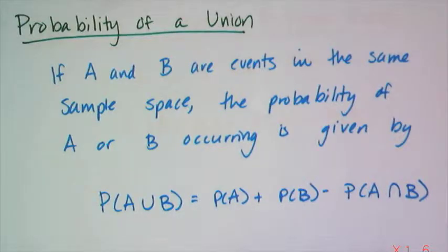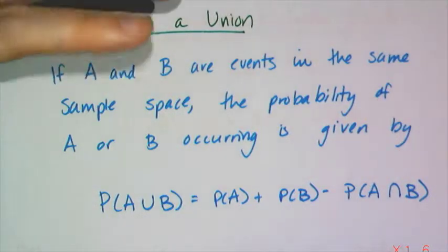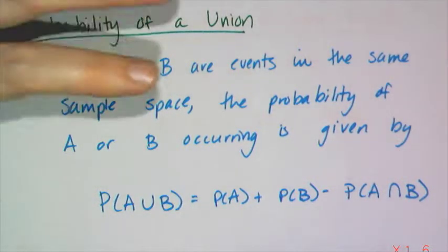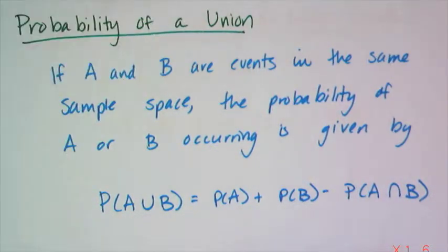The reason why we talk about union is because we want to find the probabilities of unions. If A and B are events in the same sample space, meaning same experiment and number of outcomes in the experiment, the probability of A and B occurring is given by the union of A and B. That's the probability of A happening plus the probability of B happening, subtracting off anything that's common.